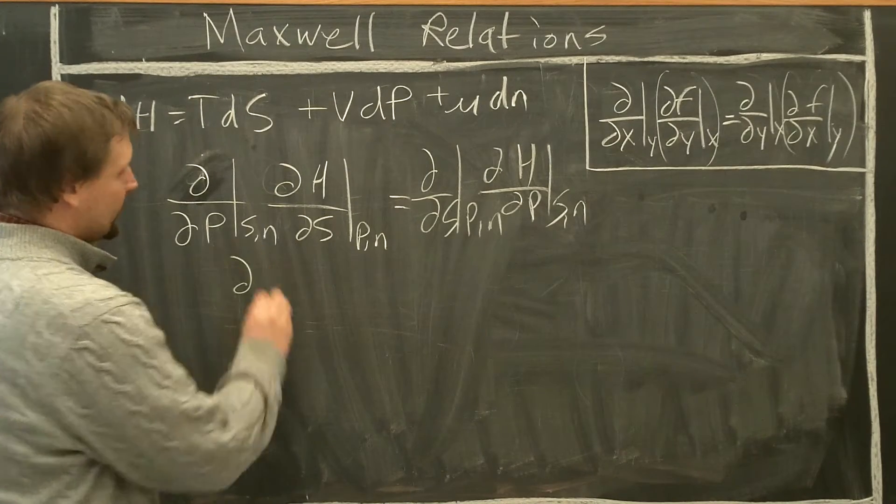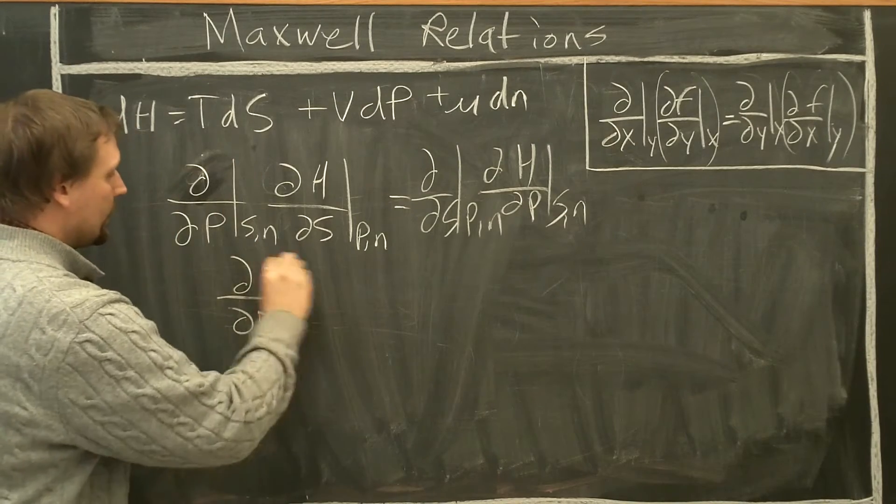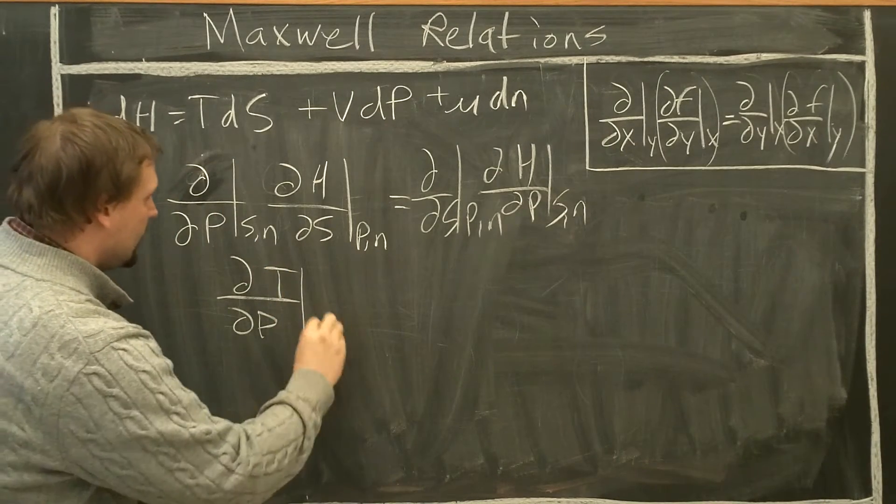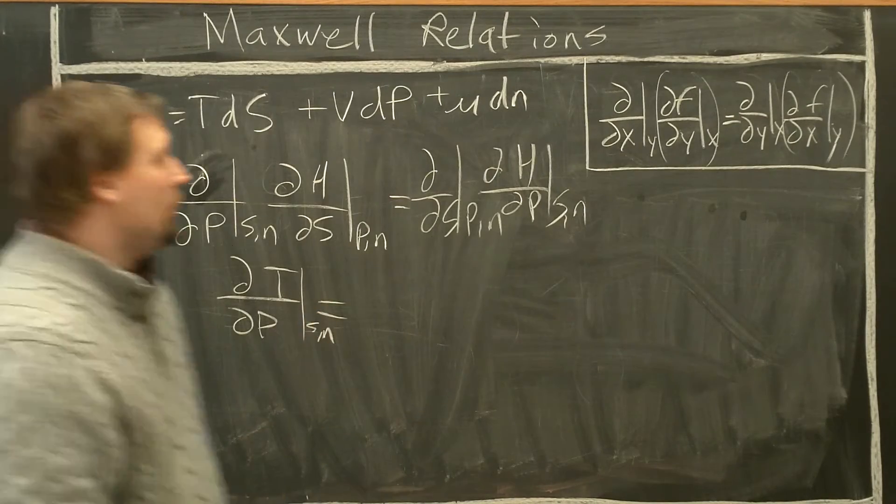So we have on this side, partial over partial T of positive T at constant S and N equals, what do we get from this side?